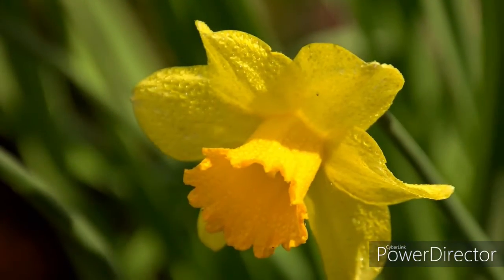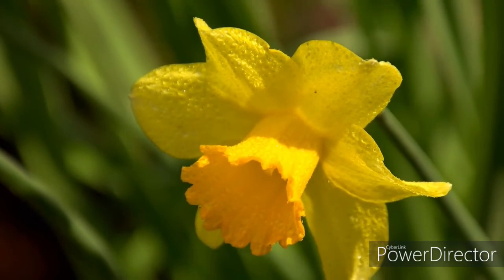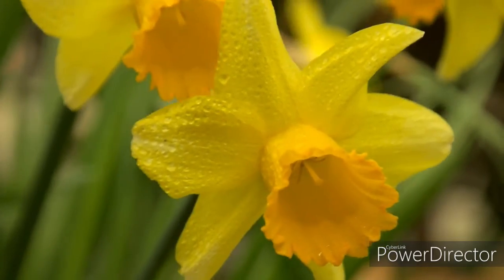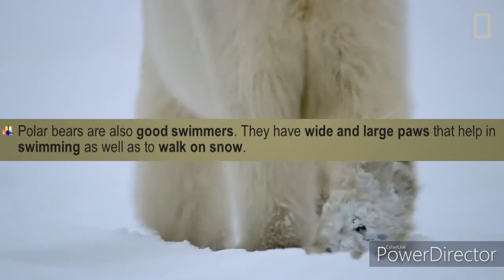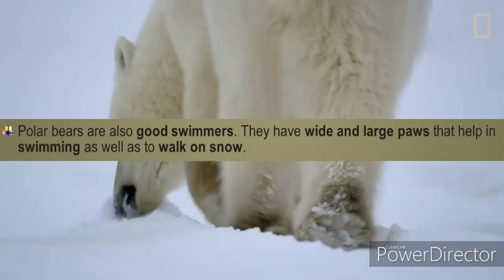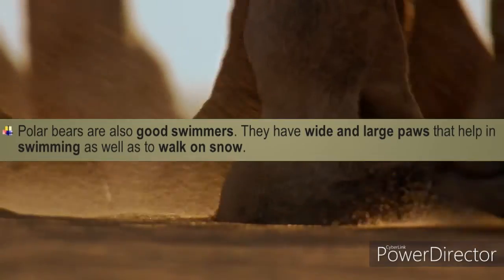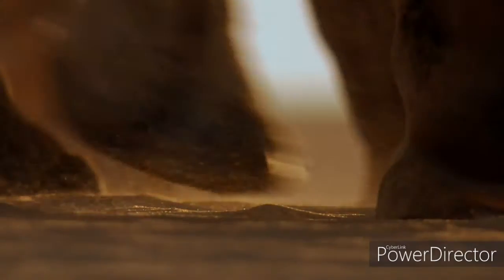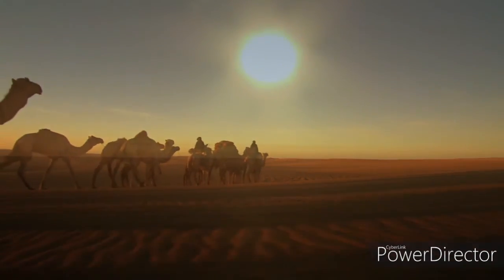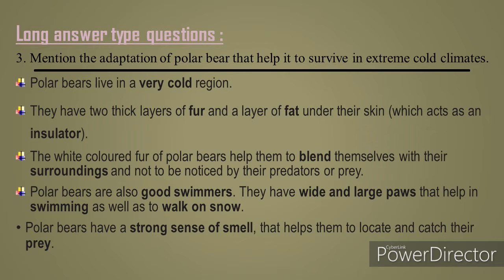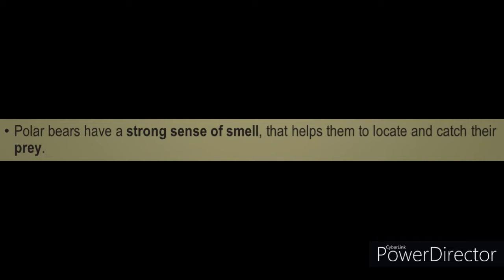The white fur helps polar bears in two ways: to escape from predators that hunt them, and to slowly move towards their prey without being seen. Polar bears are also good swimmers. They have wide and large paws that help in swimming as well as walking on snow — similar to how camels have wide paws to walk on sand. Polar bears also have a strong sense of smell that helps them locate and catch their prey.